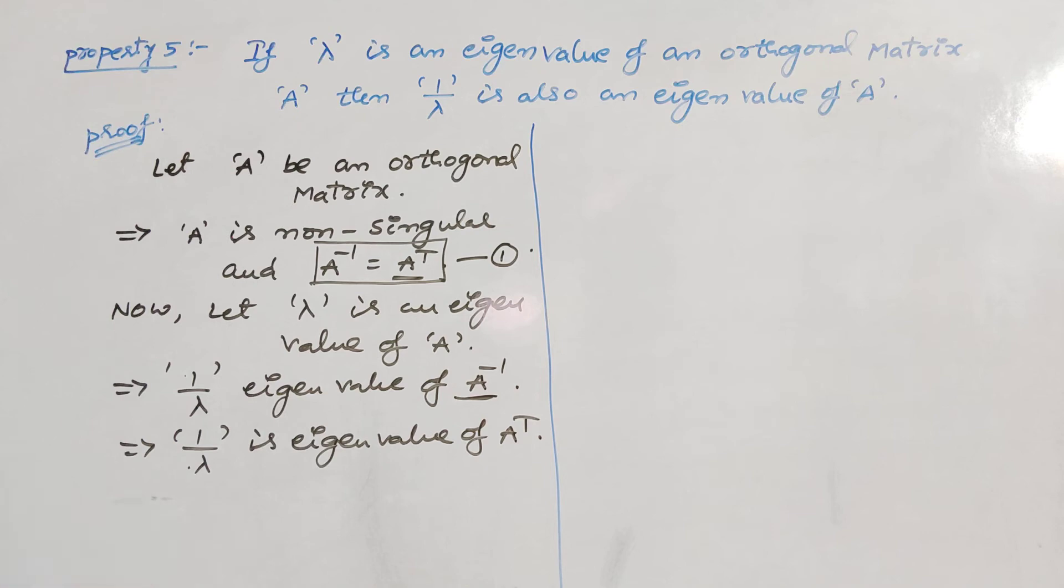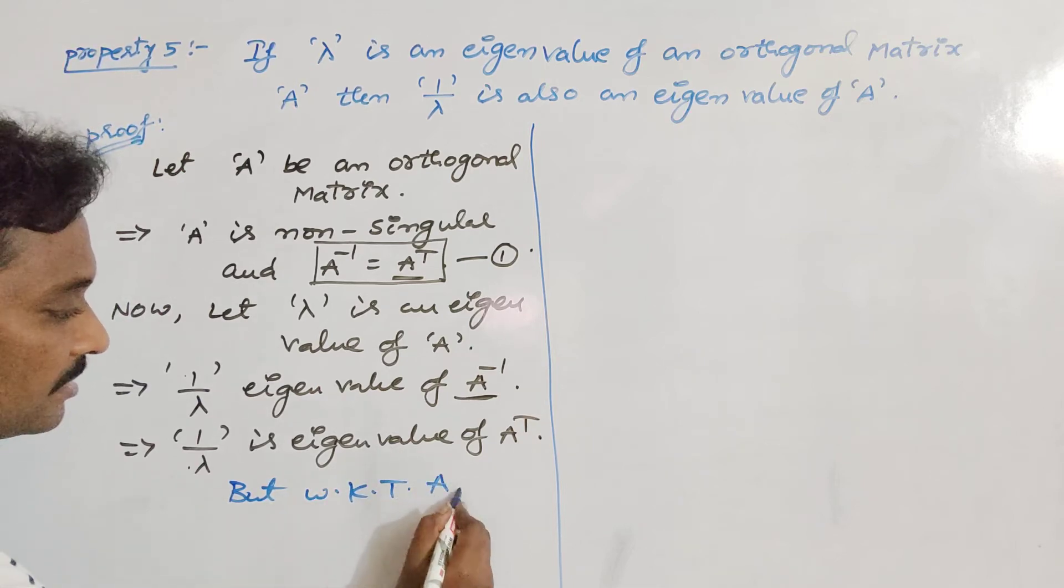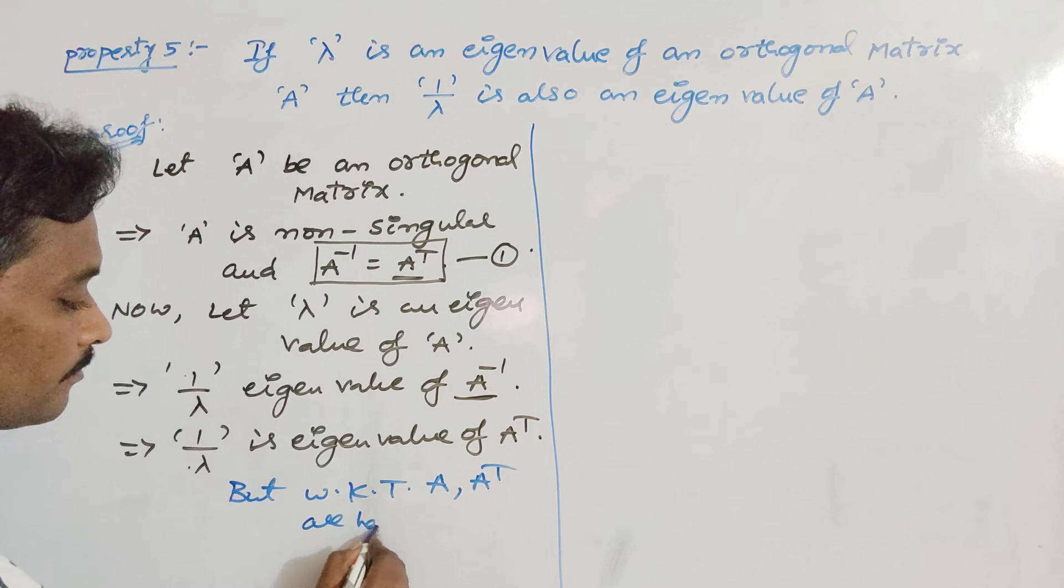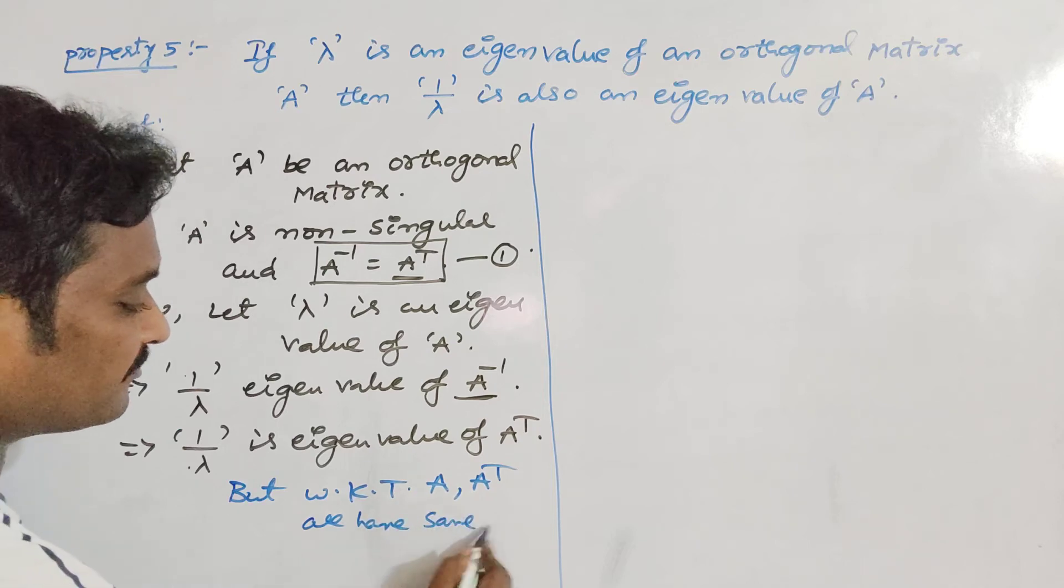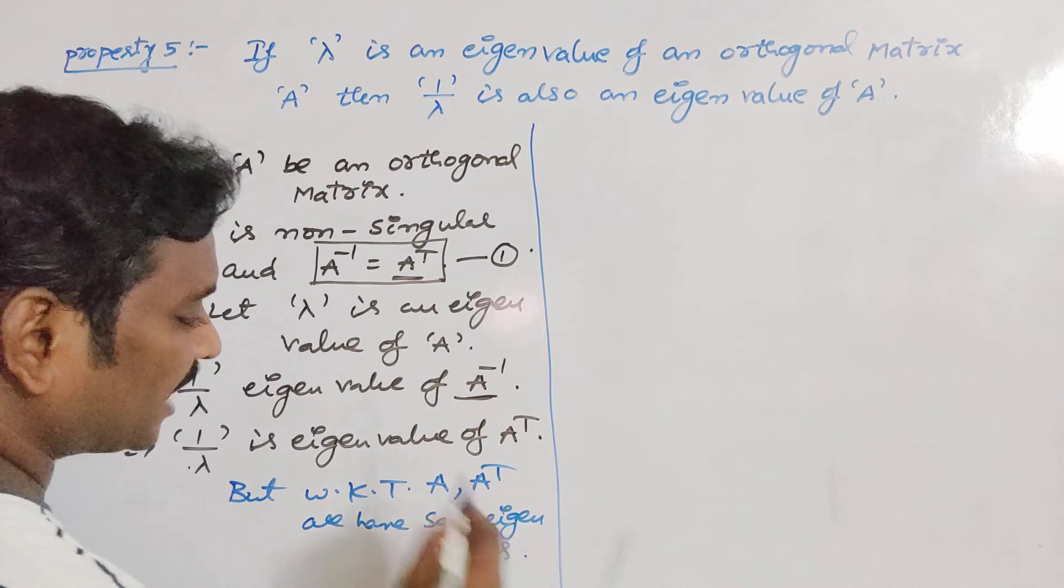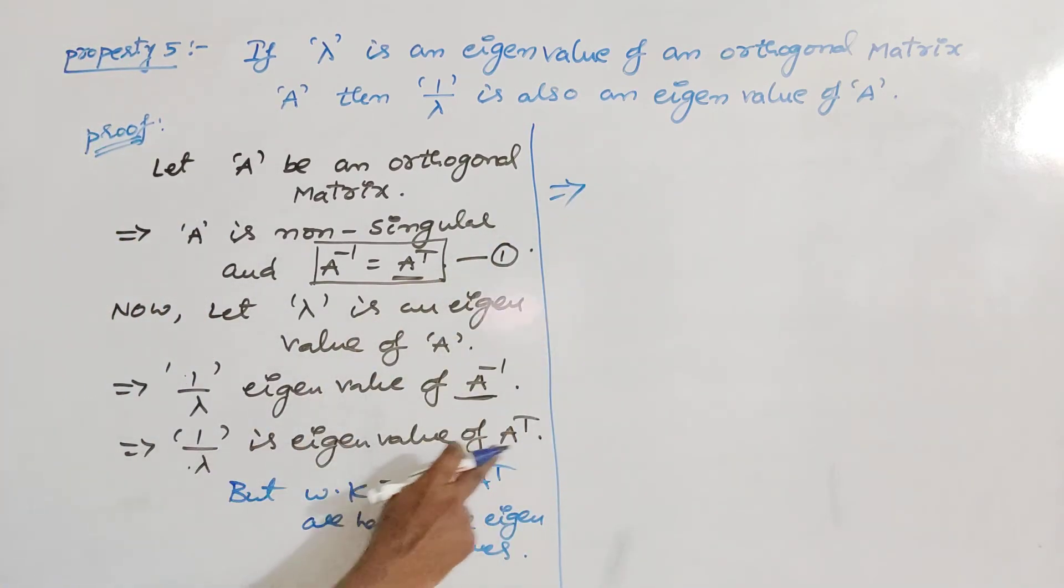But we know that A and A transpose have same eigenvalues. That is why 1 by lambda is also eigenvalue of A.